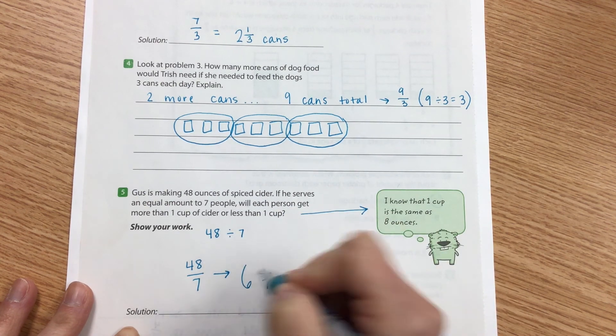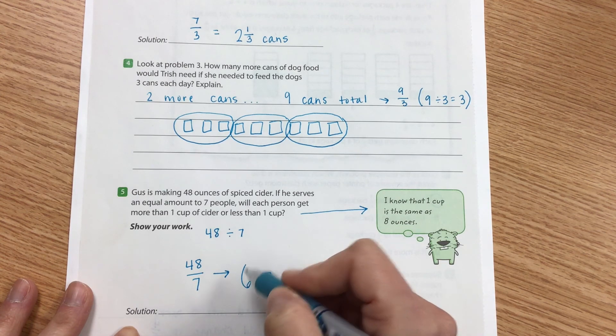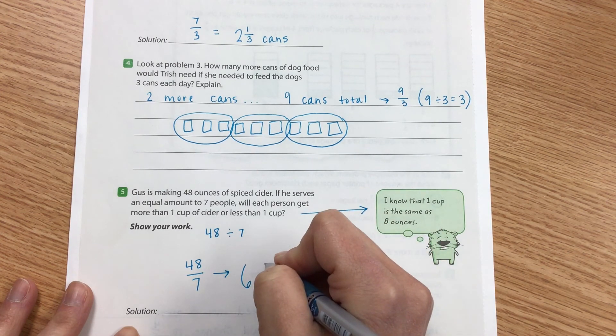Seven goes into 48 six times because seven times six is 42. How many more gets me up to 48 would be six.